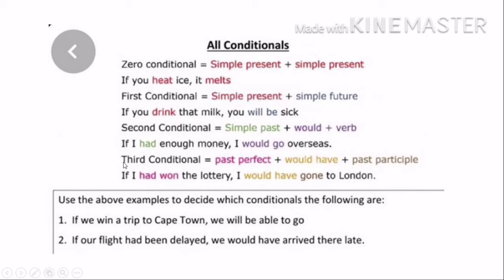And the third conditional: I have to use past perfect in the condition. If I had won the lottery, and in the result: 'would have' with the verb in past participle. I would have gone to London.